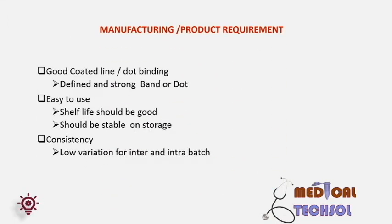Manufacturing or product requirements for binding: first, the assay should have strong binding, which is possible only when the coated line or dot has strong binding, resulting in a strong and defined band or dot. Second, it should be easy to handle, have a good shelf life, and be stable during long storage. Third is consistency — it should have no or negligible variation for inter or intra-lot production.